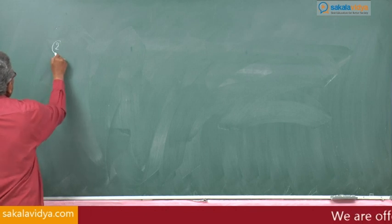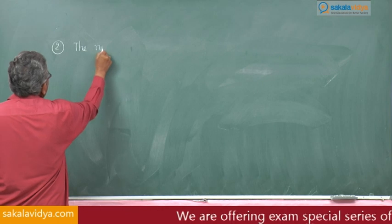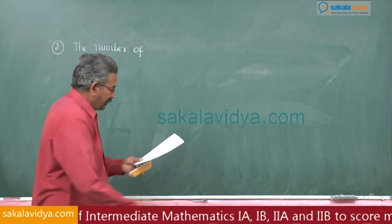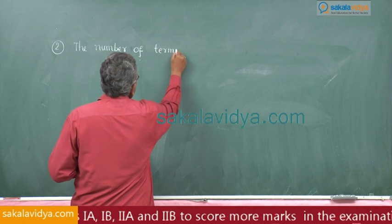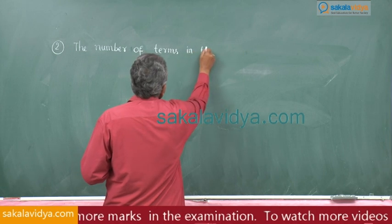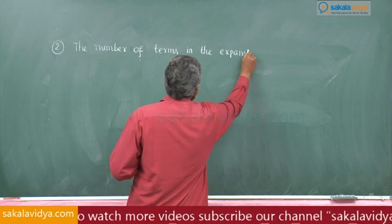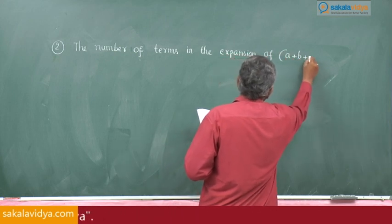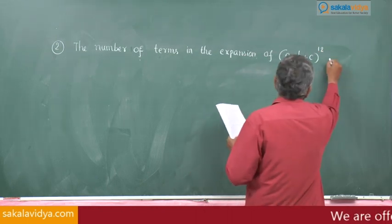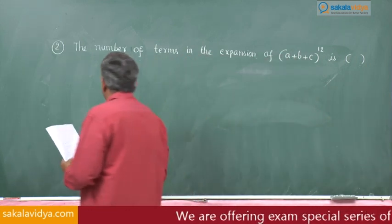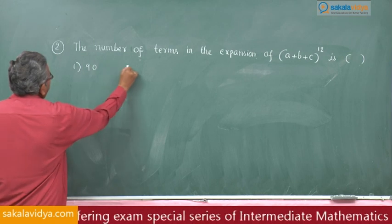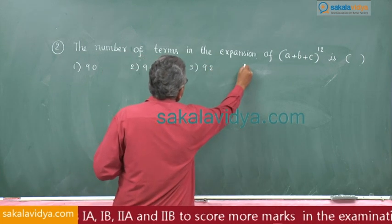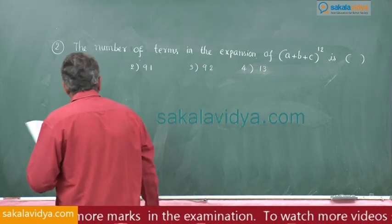Second problem: The number of terms in the expansion of (A + B + C)^12 is: first option 90, second option 91, third option 92, fourth option 13.